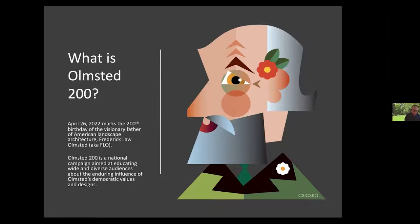My plan today is this: I will review Olmsted's life and career. Then we will explore the Olmsted legacy across North America, including Senior but also the works of the two sons, who will be introduced shortly. And then towards the end, we'll spend time focusing on a representative sampling — a mini tour — of key Olmsted landscapes in eastern Massachusetts and in the state of Maine.